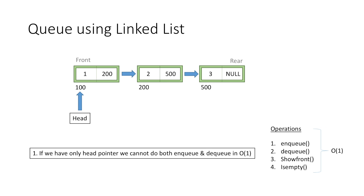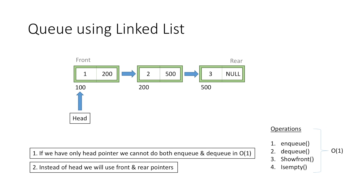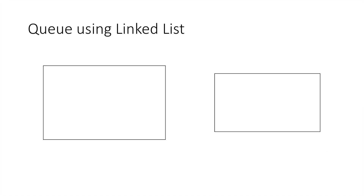To solve this problem, instead of just head, we will use two pointers — front and rear — to keep track of the start and end of the linked list. Using the front pointer we can dequeue in constant time, and using the rear pointer we can enqueue a new node in constant time. Now let's start implementing our queue.